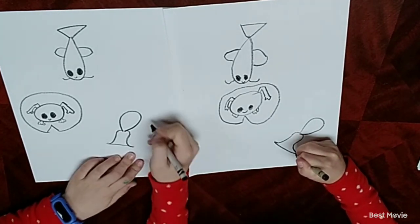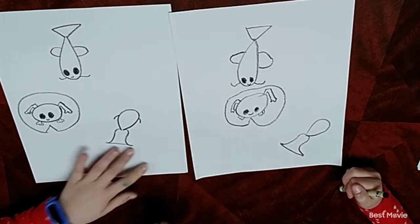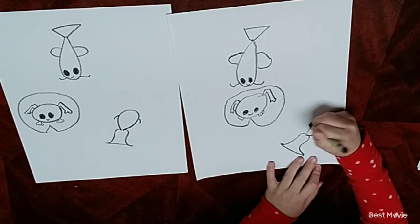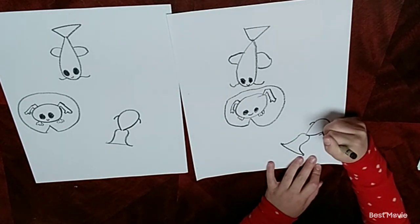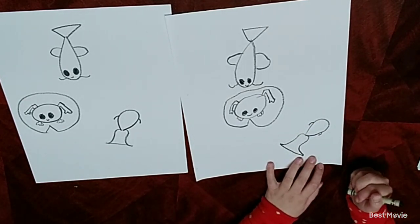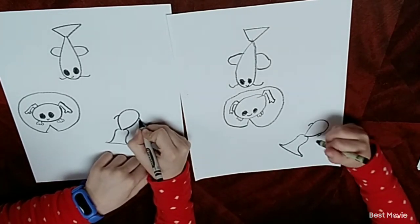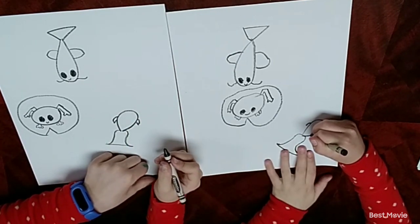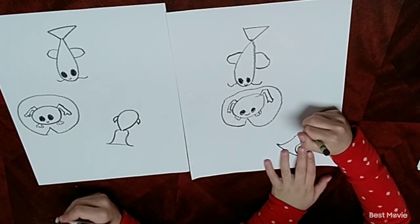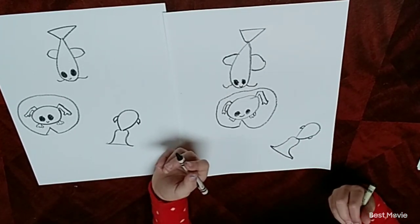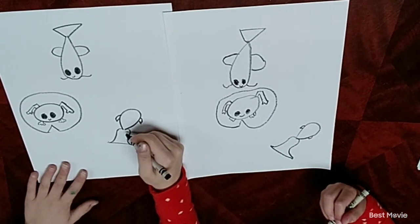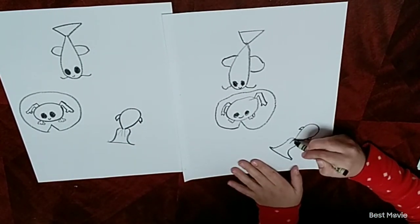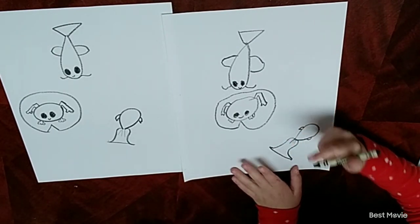Now we're going to draw two kind of like arms coming out of him. And now you're going to connect it. And you are going to draw a line like this, this, and this. Now don't make it hard. Just lightly add it.